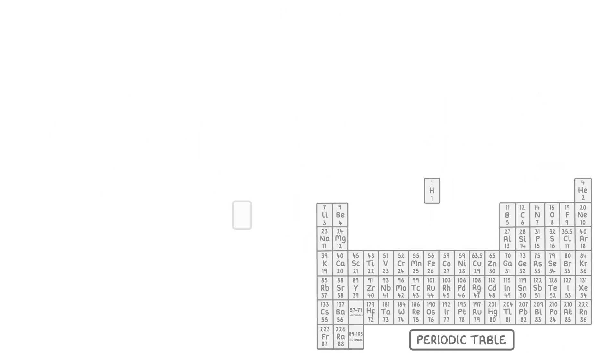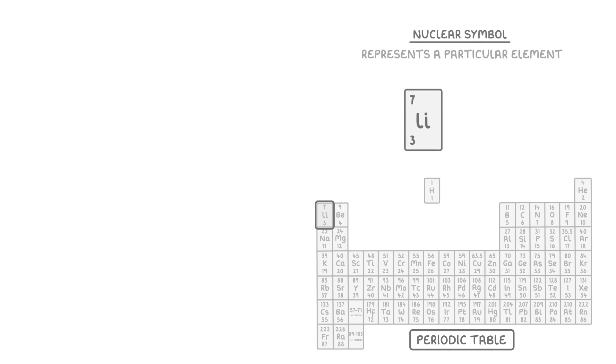If you look at a periodic table, each box is known as a nuclear symbol and represents a particular element, like this one for lithium. Inside the box is all the important information that you need to know about that element.